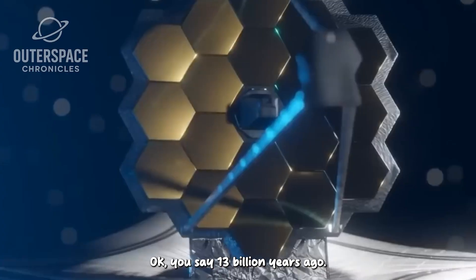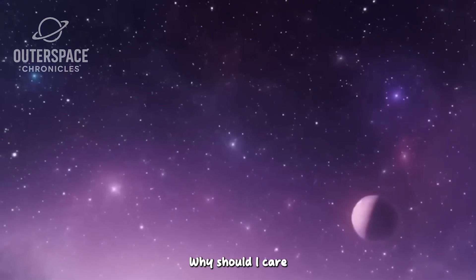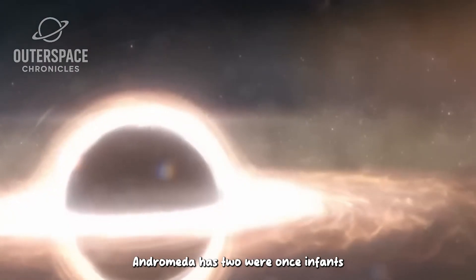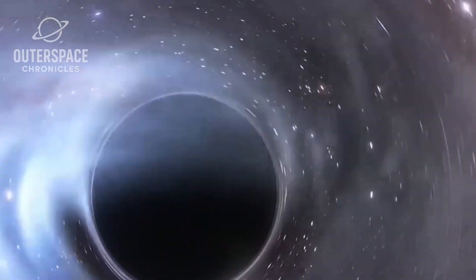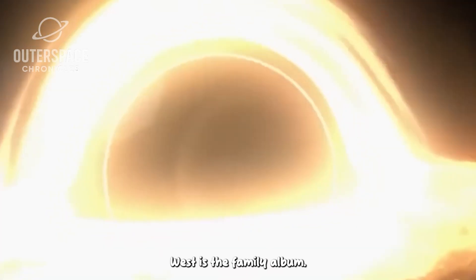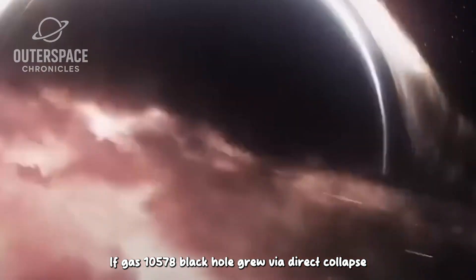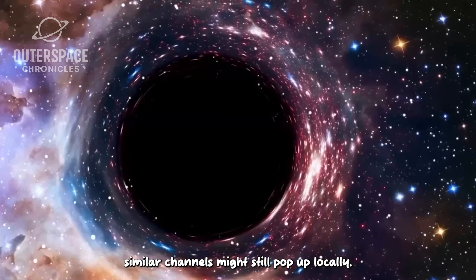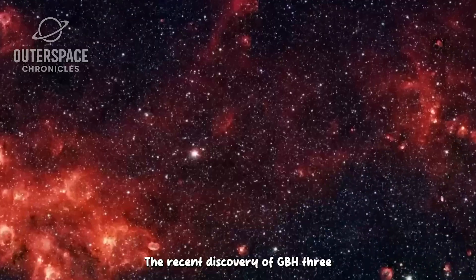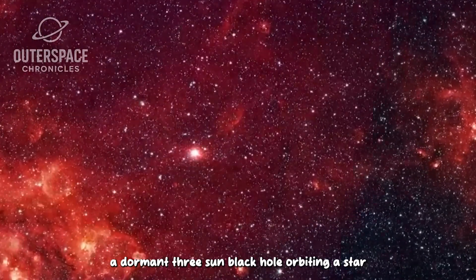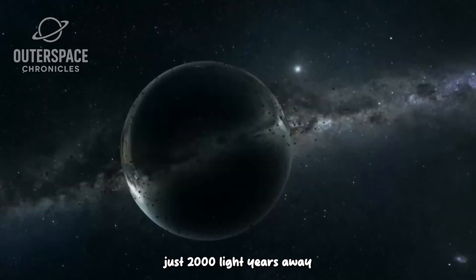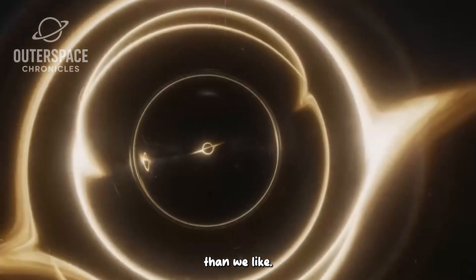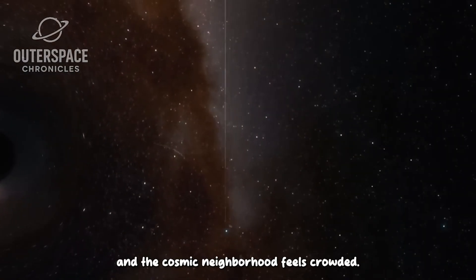Okay, you say, 13 billion years ago, why should I care? Because the black holes in today's galaxies, M87 star, SAG A star, Andromeda's P2, were once infants. Their baby photos are buried in the deep infrared, and JWST is the family album. If GS 10578's black hole grew via direct collapse, or Super Eddington gorging, similar channels might still pop up locally. The recent discovery of Gaia BH3, a dormant 33-sun black hole orbiting a star just 2,000 light-years away, suggests quiet black holes lurk nearer than we like. Scale that up by eight orders of magnitude, and the cosmic neighbourhood feels crowded.